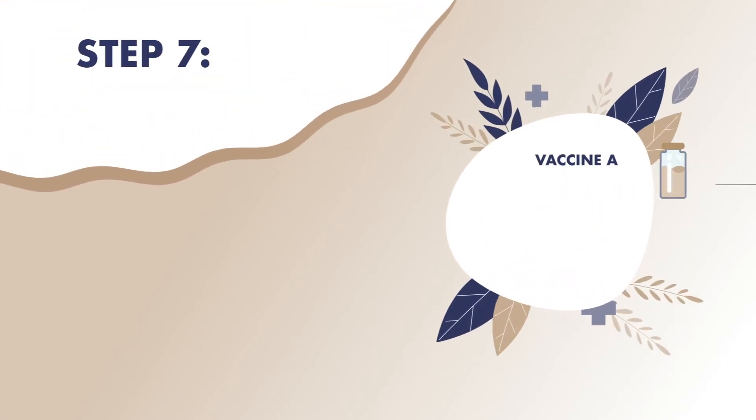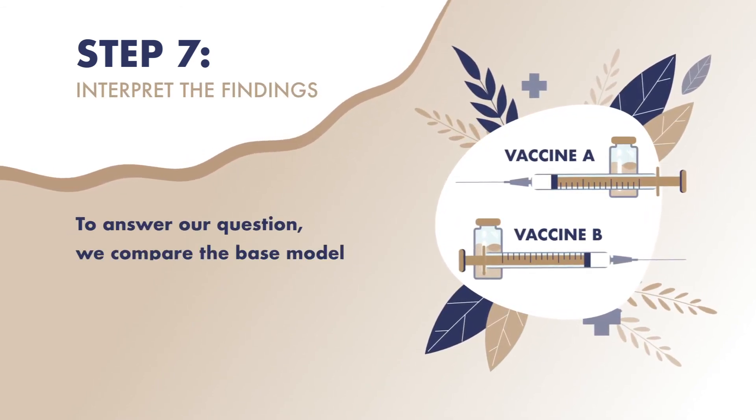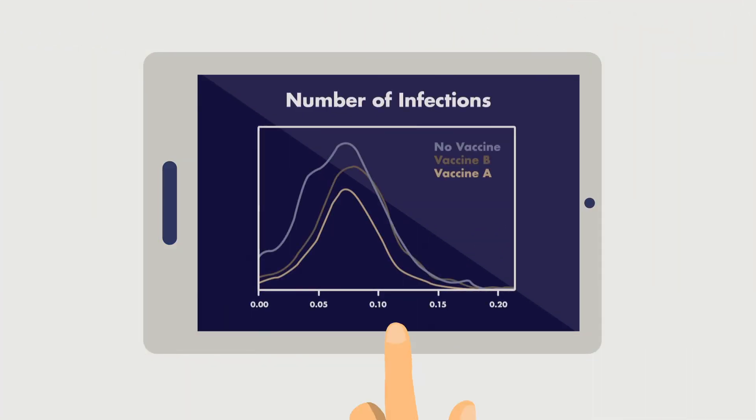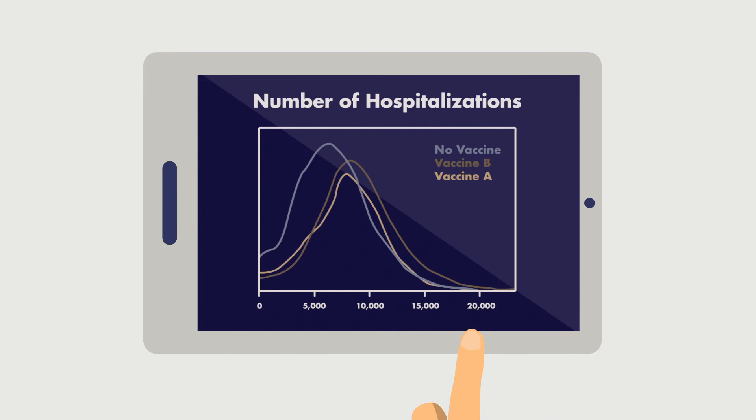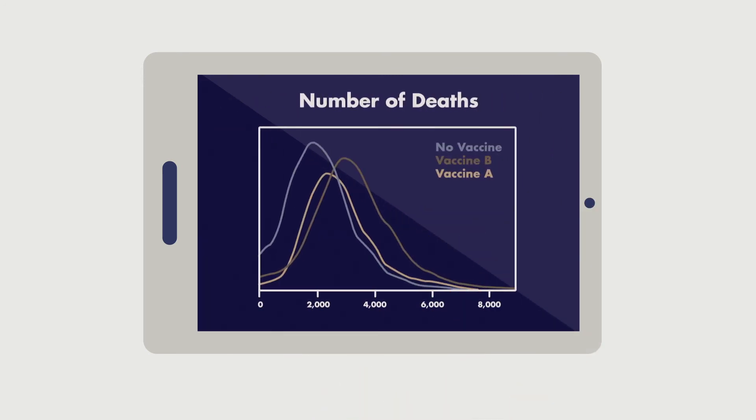Step 7: Interpret the findings. To answer our question, we compare the base model, no vaccine, to the vaccination models for the number of infections, the number of hospitalizations, and the number of deaths.